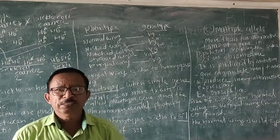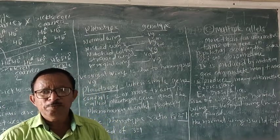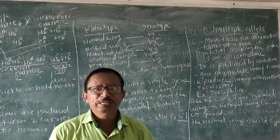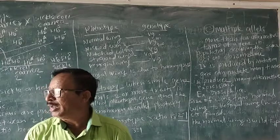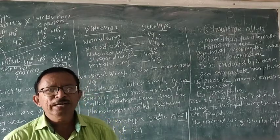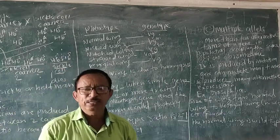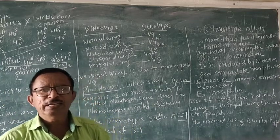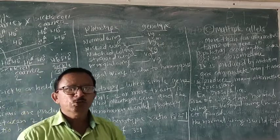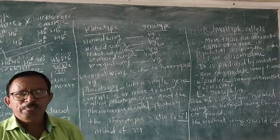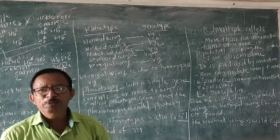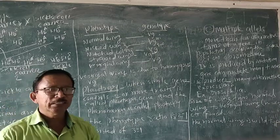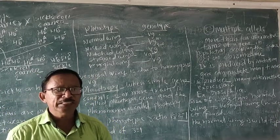Good morning students. In the last period we completed gene interactions — co-dominance and incomplete dominance. With the example in some plants, the expression is not like either parent but is in between them — that is the intermediate expression. In cattle hair color, both colors express equally; neither can suppress the other.